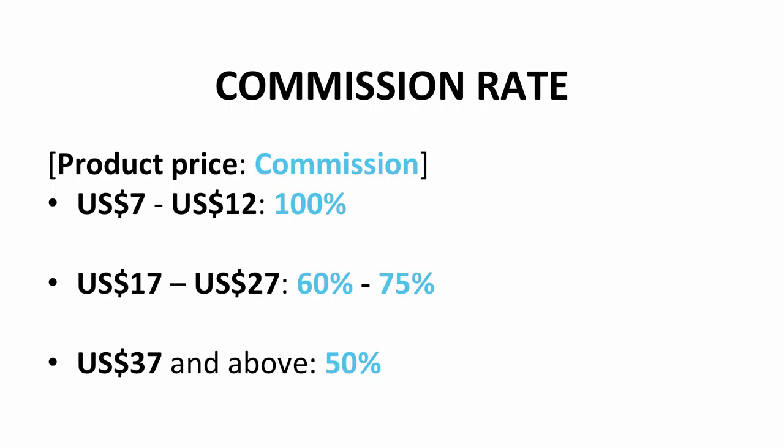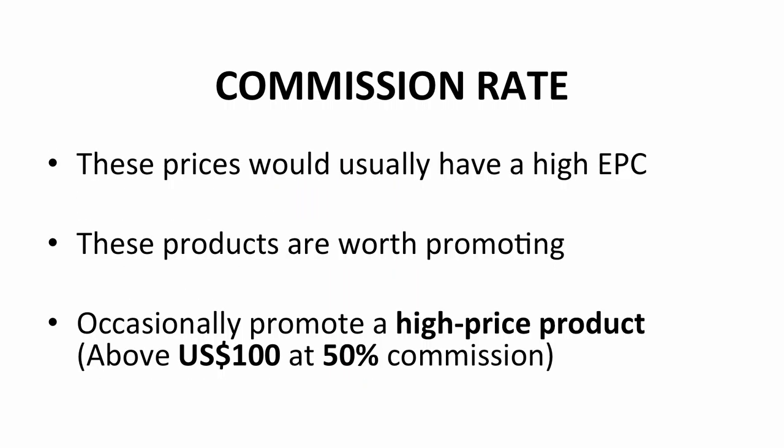The standard commissions are 100% for products that cost between $7 to $12, 60 to 75% for products that cost $17 to $27, and 50% for products that cost $37 and above. The prices mentioned would usually have a high EPC, meaning these products are worth promoting. They fit the criteria in which a profitable product is required. If you find products that offer commission at these levels and also fit the criteria listed, go ahead and promote them.